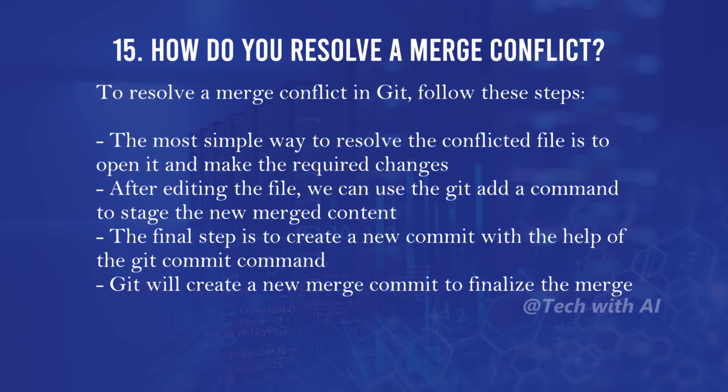How do you resolve a merge conflict? To resolve a merge conflict in Git, follow these steps: the simplest way is to open the conflicted file and make the required changes. After editing the file, use the git add -a command to stage the new merged content. The final step is to create a new commit with the git commit command. Git will then create a new merge commit to finalize the merge.